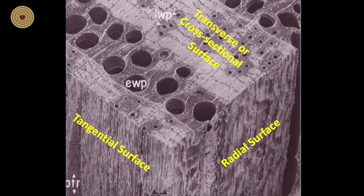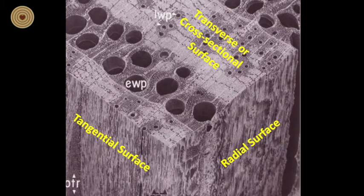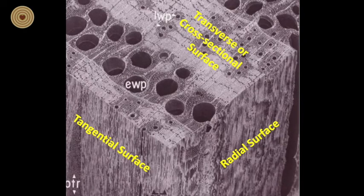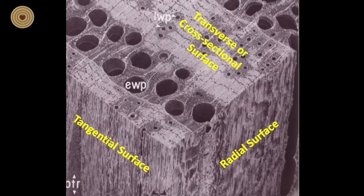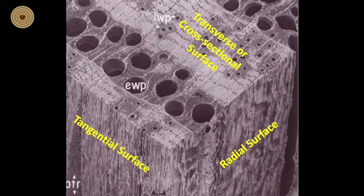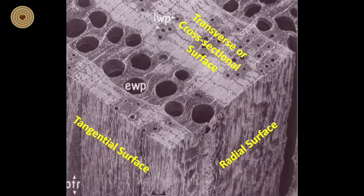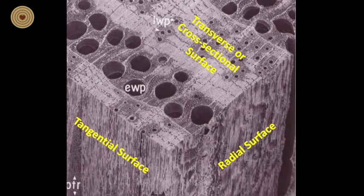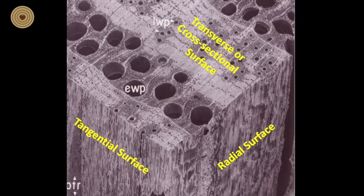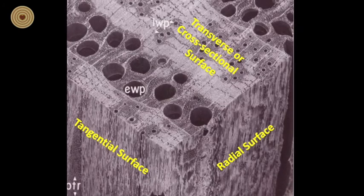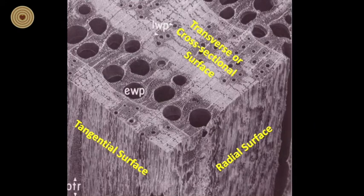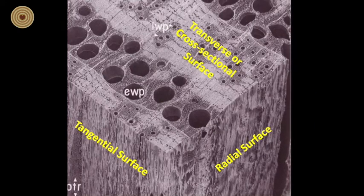As noted, hardwood anatomy is more complex than softwood anatomy. And with this short introduction, we have time to only scratch the surface. The orientation of this block of hardwood as viewed in another scanning electron microscope image is a little different than the orientation we saw in the softwood. But note that we still have a cross-section and radial and tangential surfaces as shown.